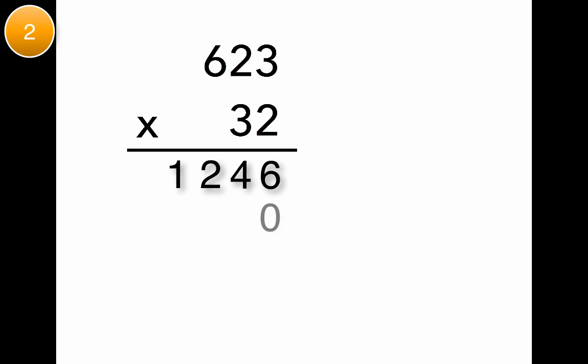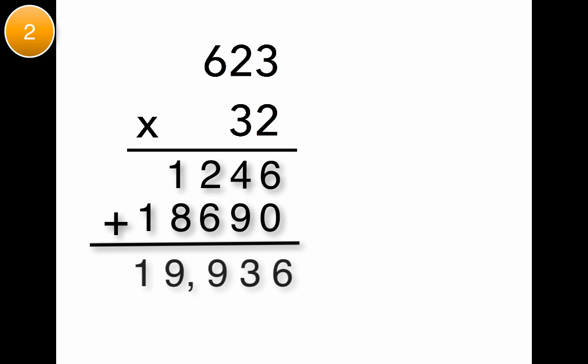Moving on to the tens, put your 0 down since we are in the tens. 3 times 3 is 9. 3 times 2 is 6. 3 times 6 is 18. Go ahead and add them together. Your final answer should be 19,936.